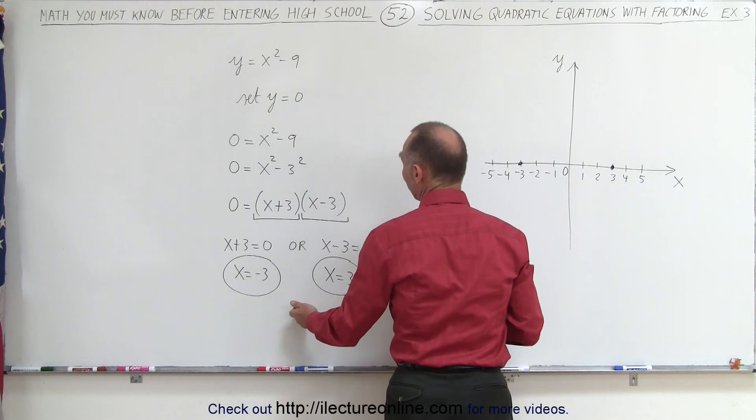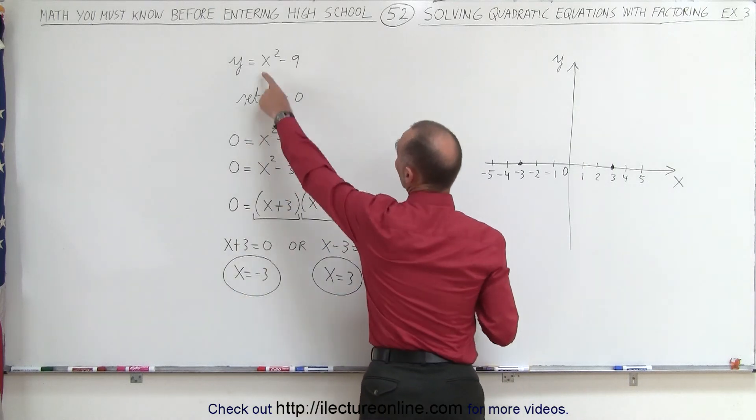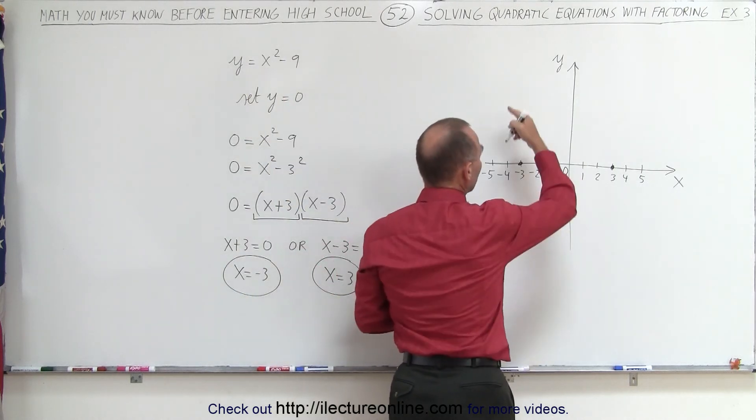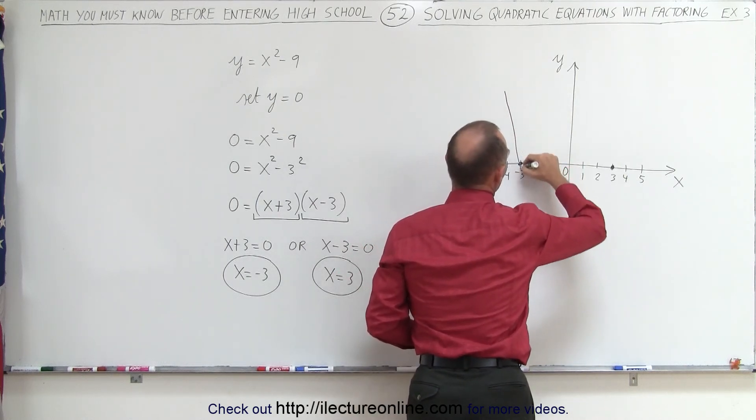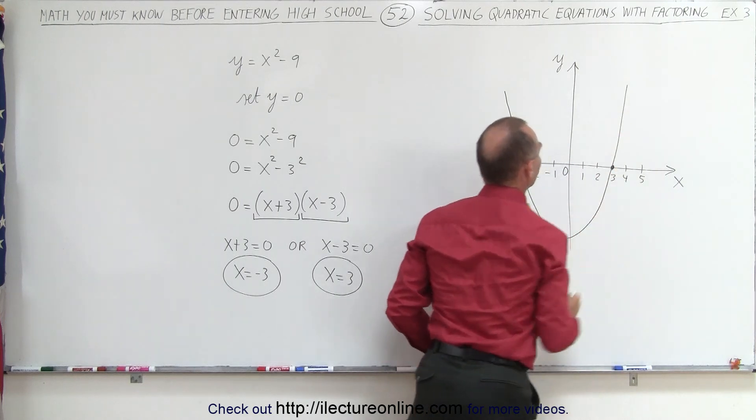Which means that the graph, the parabola, and since the number in front of the x-squared term is positive, we know the parabola opens upward. And we then can suspect that the graph will look something like this.